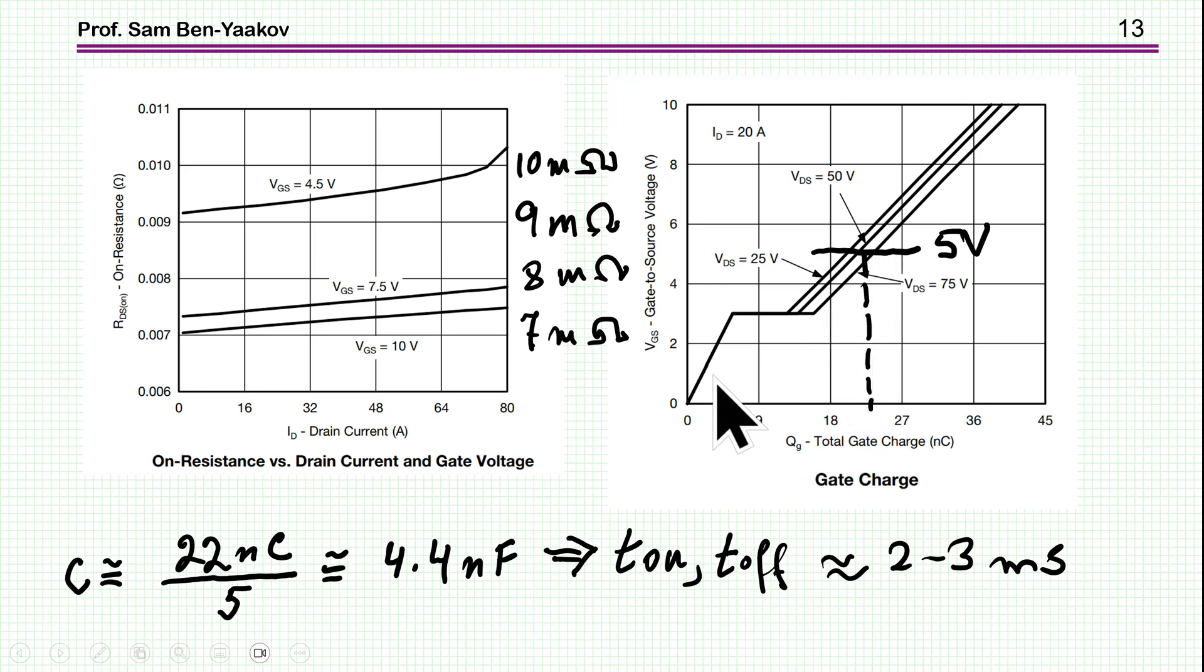Now, using this plot here, I can actually get also the input capacitance of this particular diode for the 5 volts. So I have here a charge, total gate charge of about 22 nanocoulombs, and this is 5 volts. So 22 over 5 is 4.4 nanofarad. Now, remember that the data that they gave in the table was for 200 picofarad. So for this transistor, the turn on and off time will be something lying in the range of 2 to 3 milliseconds, which again, for many applications, it is more than sufficient.